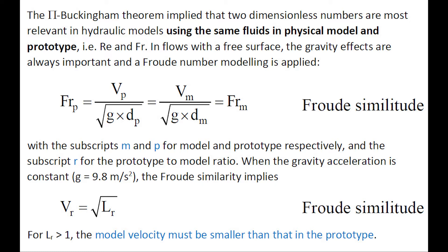When the gravity effects are important, like in free surface flow, Froude modeling is applied, with the Froude number being the same in model and prototype. When the gravity acceleration is constant, the Froude similarity implies that the velocity scaling ratio is proportional to the square root of the geometric scaling ratio. Namely, for a small size physical model, the model velocity will be smaller than in the prototype.